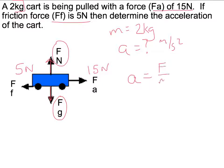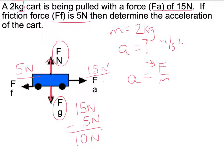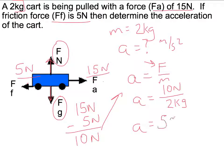We'll use the formula for Newton's second law, but we need to figure out what to put for force. Looking back at our free body diagram, we have a 15 newton applied force pulling the cart to the right, but a 5 newton friction force pulling the cart to the left. So we want the net force — the resultant vector of these two forces. We take 15 newtons minus 5 newtons, since 5 newtons is going in the opposite direction, giving a net force of 10 newtons. Plugging in 10 newtons on top and 2 kg on the bottom, our acceleration is 5 meters per second squared.